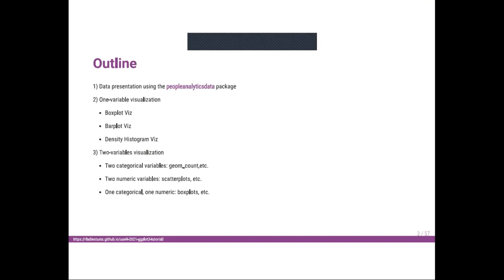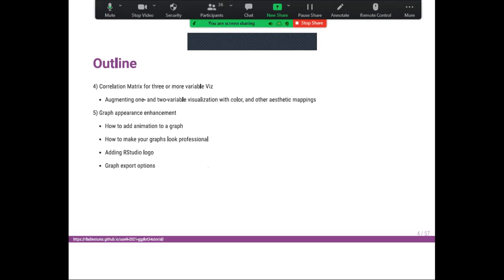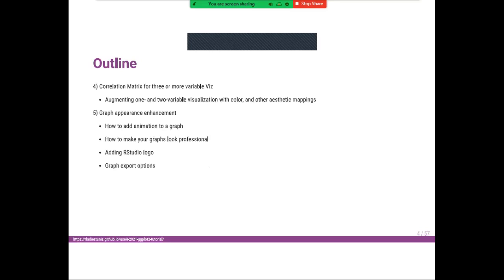Then we will do some two-variable visualization, visualizing two categorical variables, two numeric variables, and one categorical and one numeric variable. We will also do some correlation metrics, and finally we will close with graphic appearance enhancement, showing you how to add animation to your graph, how to add a logo to make graphs look more professional, and how to combine two or three graphs together.